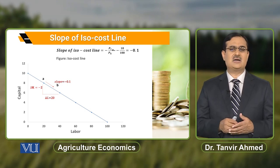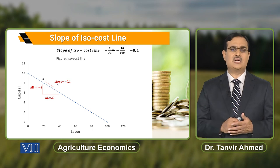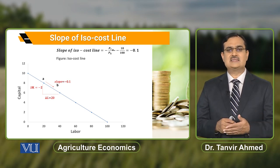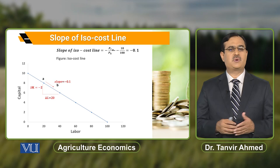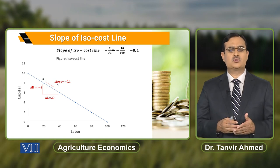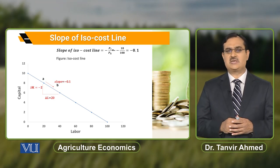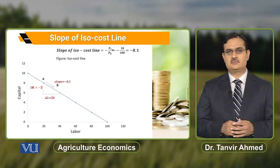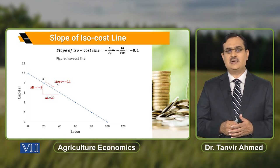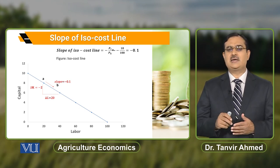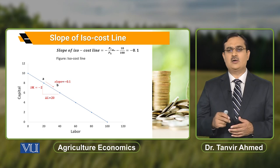हम slope of isocost line को compute कर सकते हैं by simply using prices of two inputs. हमने negative sign डाला है क्योंकि isocost line is negatively sloped, जबकि prices of both inputs will always be some positive number. इसीलिए formula में minus PL over PK लिखते हैं।